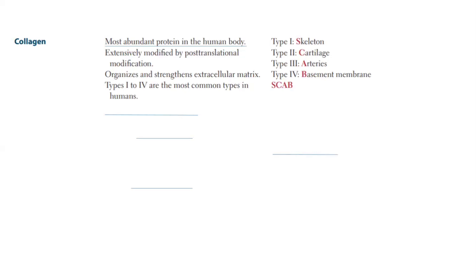There are so many types of collagen — more than 30 in our body. But the four most important ones are Type 1, Type 2, Type 3, and Type 4. To remember them, we have the mnemonic SCAP: Type 1 collagen is for Skeleton, Type 2 collagen is for Cartilage, Type 3 is for Arteries — especially remember Type 3 is for arteries — and Type 4 is for the Basement membrane, specifically the basement membrane of the kidney.